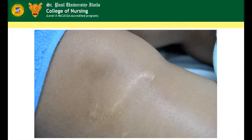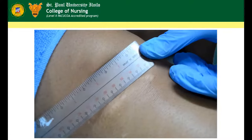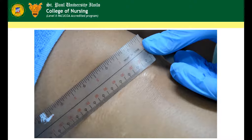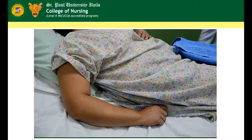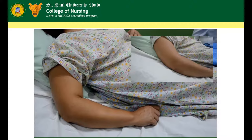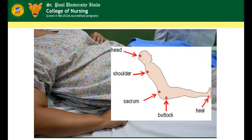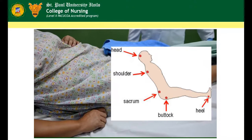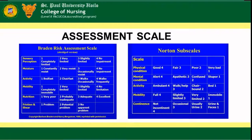Use a centimeter ruler to measure scars in approximating its length. Check skin carefully to note for breakdown on pressure point areas like elbows, hips, and sacrum. Use a scale to document the degree of skin breakdown if any skin breakdown is noted.